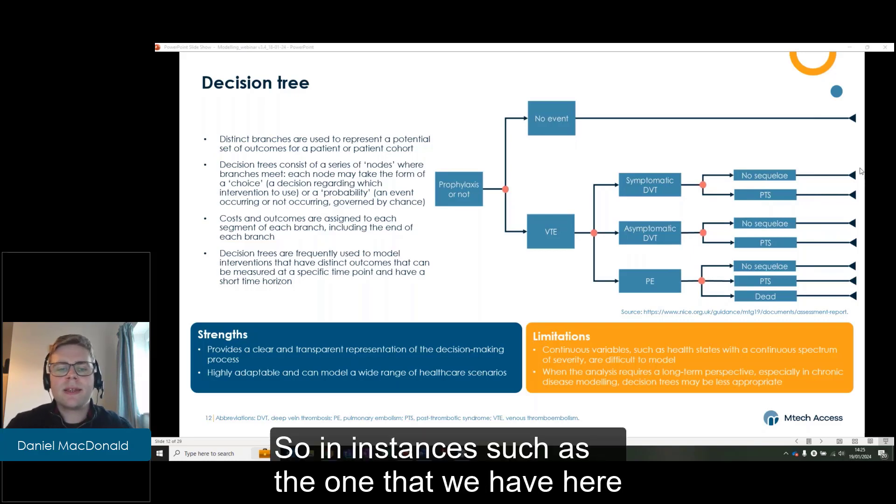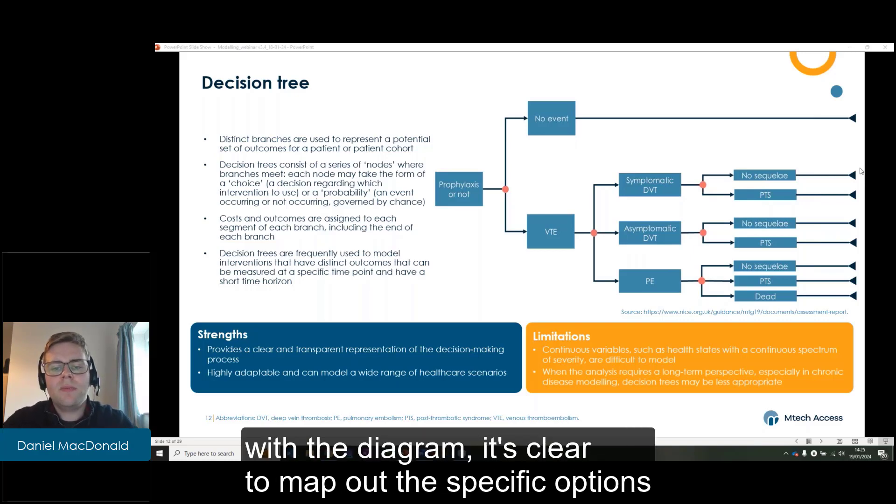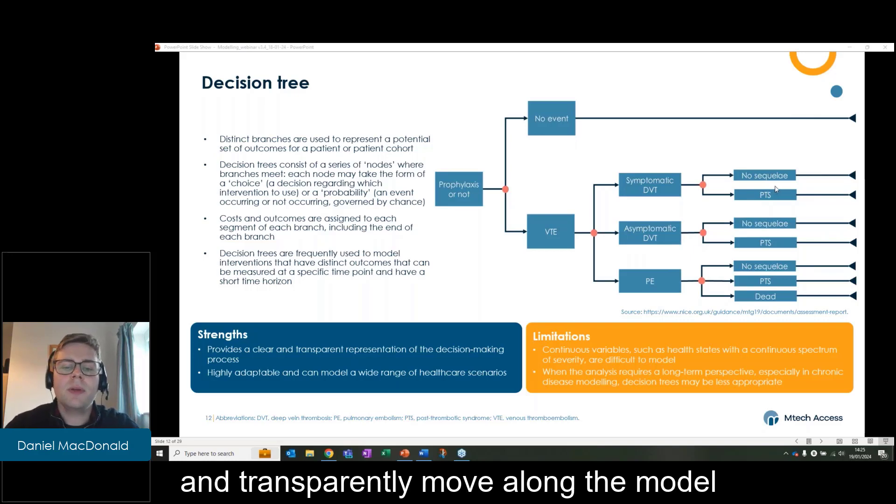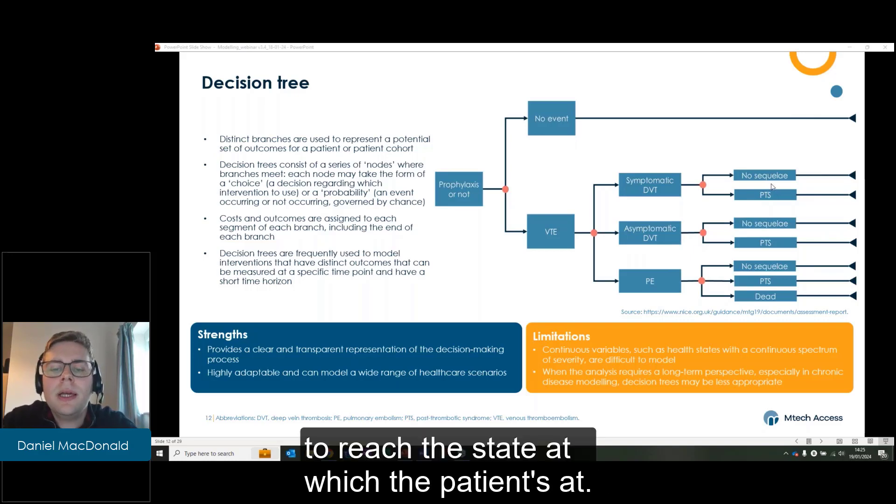So in instances such as the one that we have here with the diagram, it's clear to map out the specific options that a patient has at each point, and you're able to clearly and transparently move along the model to reach the state at which the patient's at.